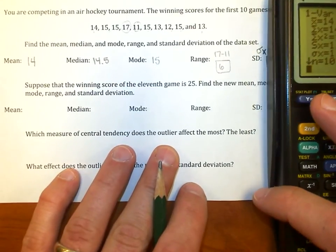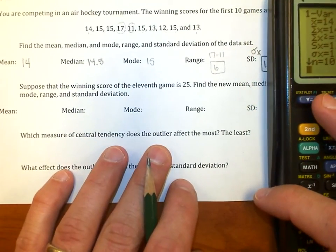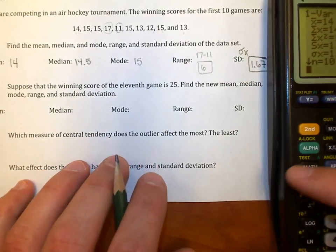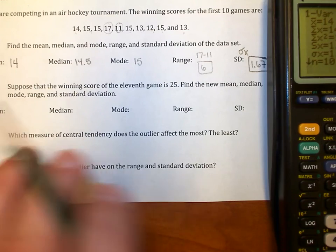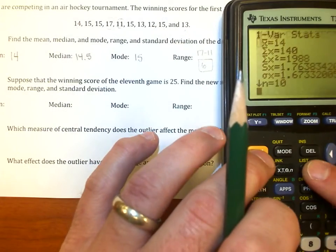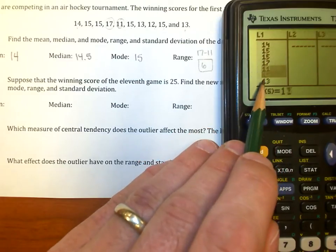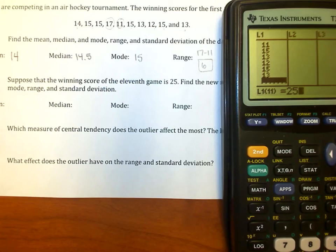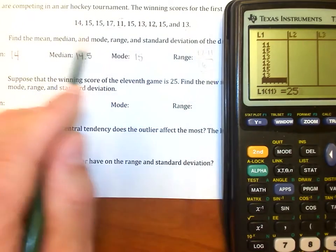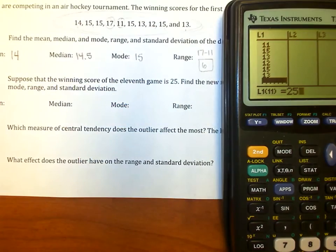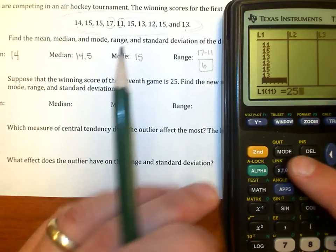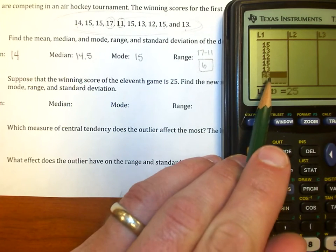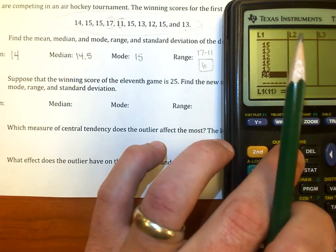So suppose that the winning score of the 11th game is 25. Put that in and basically find the new values here if 25 is the 11th value. So in other words, we're just going to repeat the process, and this is what's nice about having the calculator, is all I have to do is I go to the stat menu, I go to edit, I'm going to scroll all the way down, and now the 11th value is going to be 25. Pretty high scoring, right? Compared to all the rest of those values, man, 25 is definitely an outlier. Well, how does that affect things? I'm going to hit second. Actually, I'm going to enter first to make sure 25 is in the table. Now I'm going to hit second and quit out of the menu.